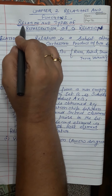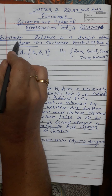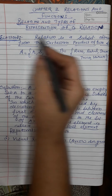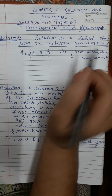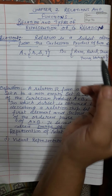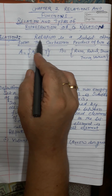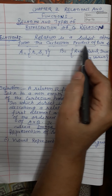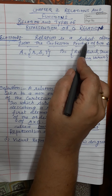What is a Relation and how do we represent it? To understand what a Relation is, we first need to know how to find it. Relation is a subset obtained from the Cartesian product of two sets.